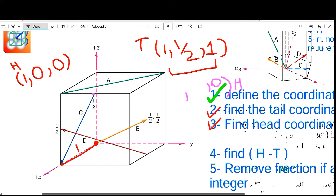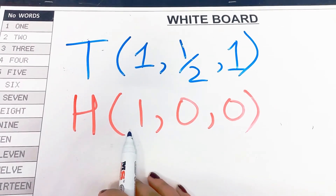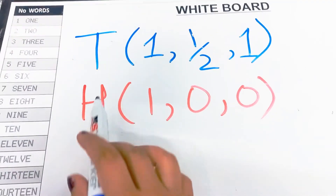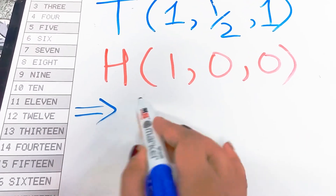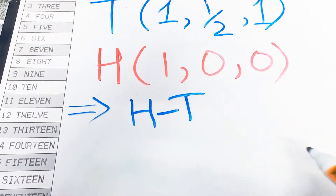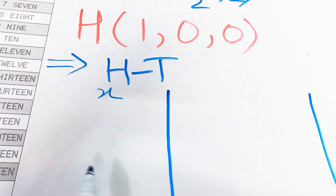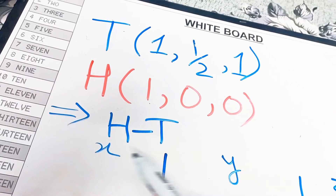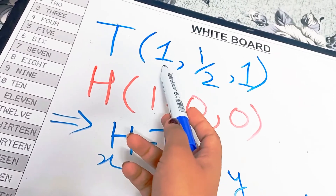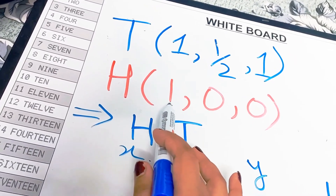Now we do the subtraction step. The head is the final point of the vector and the tail is the initial point, so we perform head minus tail. We create three blocks — one for x, one for y, one for z — and subtract the tail coordinate from the head coordinate in each case: x head minus x tail, y head minus y tail, z head minus z tail.